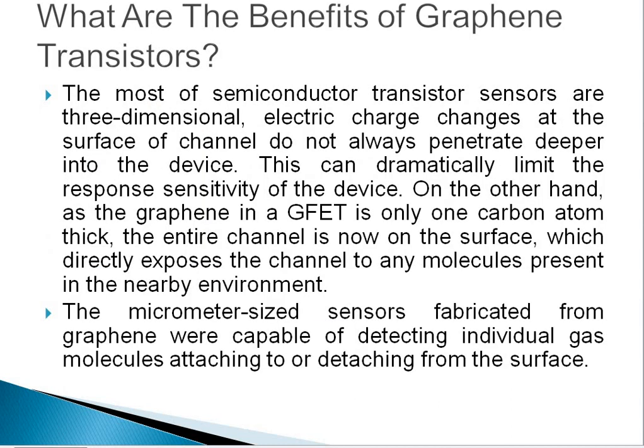What are the benefits of graphene transistors? Most transistor sensors are three-dimensional. Electric charge changes at the surface of the channel do not always penetrate deeper into the device, which can dramatically limit the response sensitivity. On the other hand, as the graphene in a graphene field effect transistor is only one carbon atom thick, the entire channel is on the surface, which directly exposes the channel to any molecules present in the nearby environment, making it best suited for sensor devices. Micrometer-sized sensors fabricated from graphene were capable of detecting individual gas molecules attaching to or detaching from the surface.